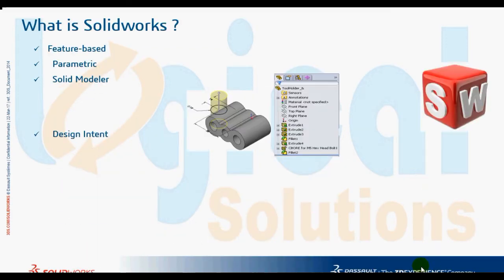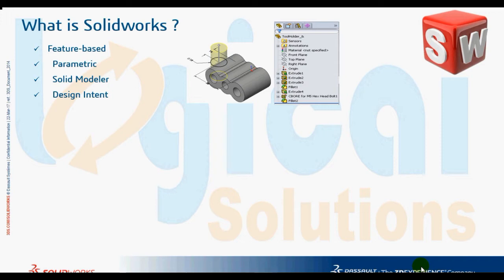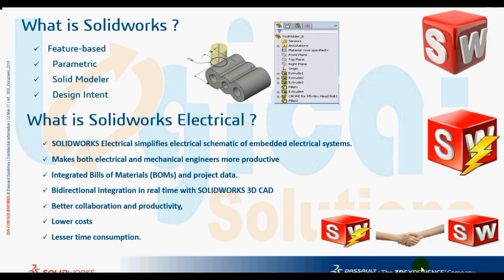Before entering SOLIDWORKS ELECTRICAL, let us discuss what SOLIDWORKS is. SOLIDWORKS design automation software is a feature-based parametric solid modeling design tool which takes advantage of an easy-to-learn Windows graphic user interface. SOLIDWORKS ELECTRICAL integrates electrical schematic design data with the SOLIDWORKS 3D model of a machine or other product, bidirectionally and in real time.